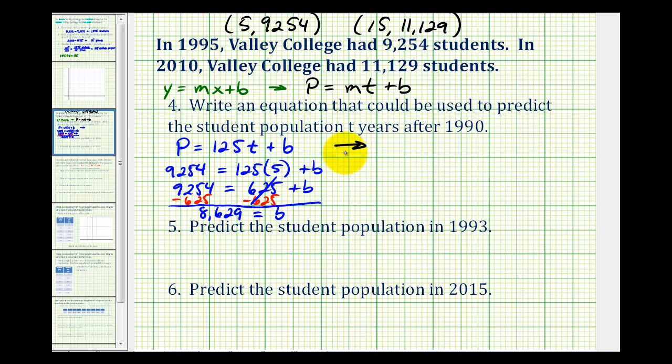Which means our prediction equation would be the student population p is going to be equal to 125 times t, where t is the number of years after 1990, and then plus 8,629. And now we can use this equation to make predictions about the student population of other years.